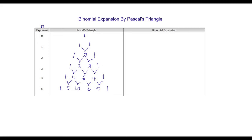Let us write the equations by using this triangle. (Y minus 1) to the power 0 is equal to 1, since any number to the power 0 is 1.